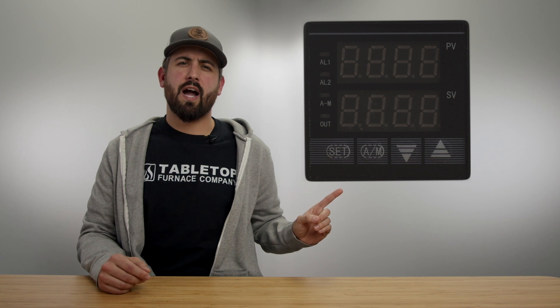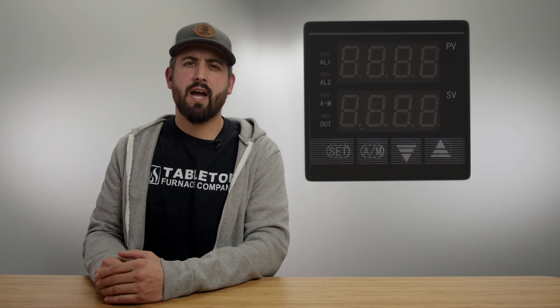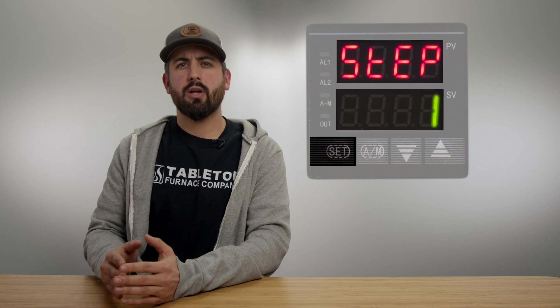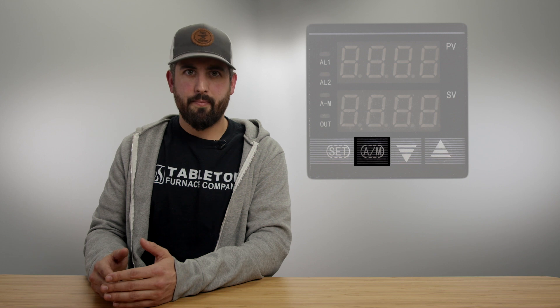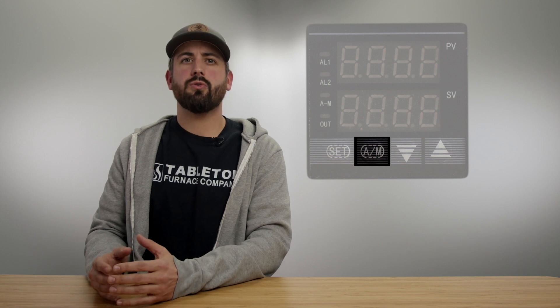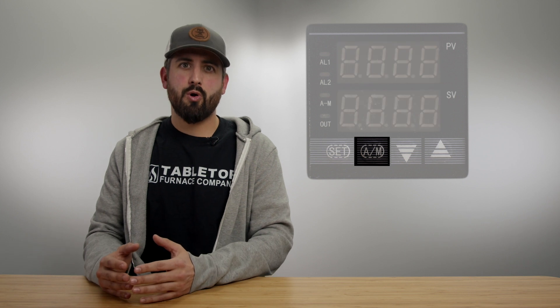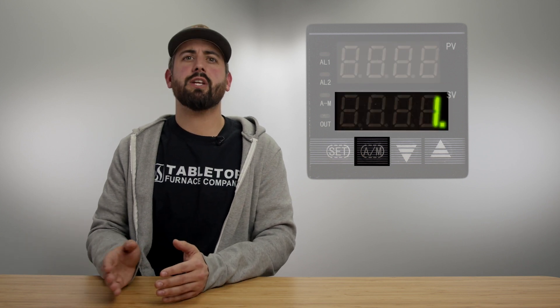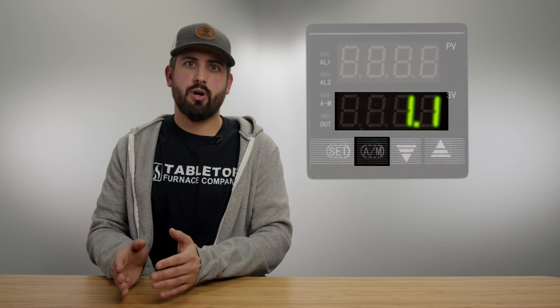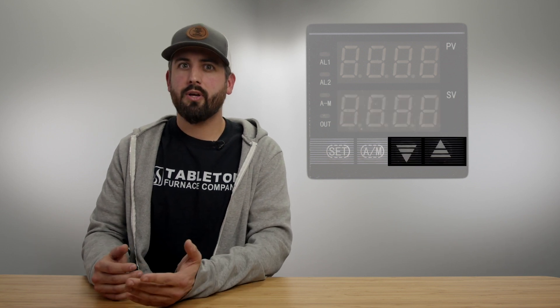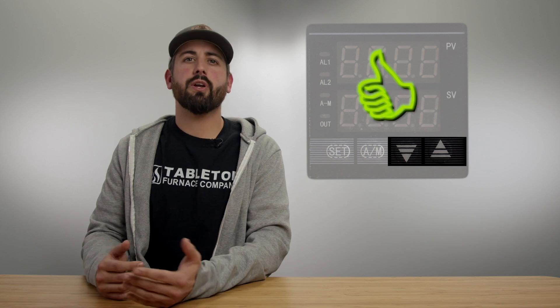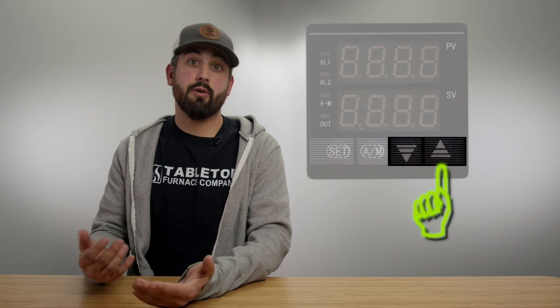Here is the digital controller you're going to find on the front of your furnace. Notice you've got four main buttons. Set - this is the button we're going to use to cycle through the different steps of a program. You've got A/M, this is going to be the button we use to start and enter a programming mode. Once in a programming mode we're also going to use this button to control the cursor to change which number we're actually going to be adjusting. Then you'll see you have an up and a down arrow. This is pretty self-explanatory. We're going to use these buttons to change your value either up or down.